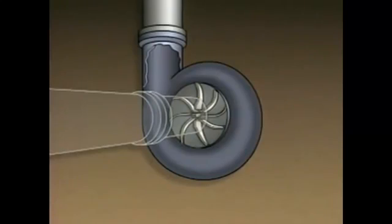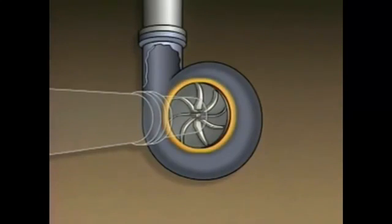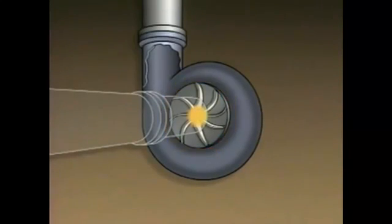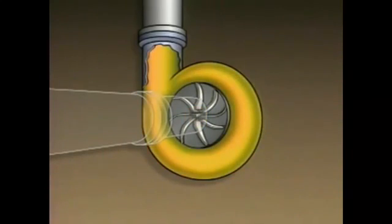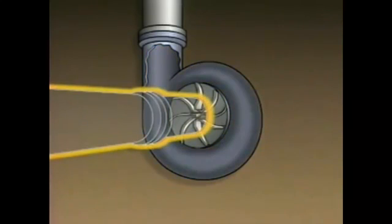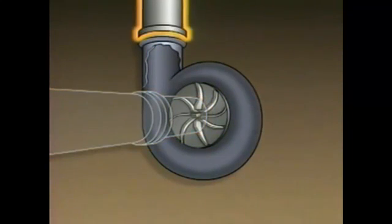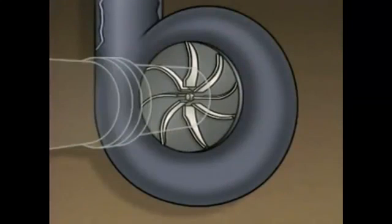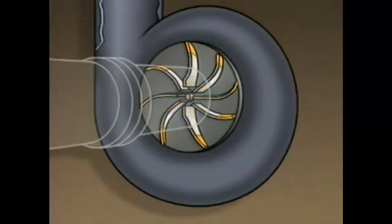Now let's look at a single-stage centrifugal compressor from the suction line side to see how it works. In this illustration, we can see the impeller, the suction eye, which is the area in the center of the impeller, the volute, the suction line, and the discharge line. The impeller consists of a series of vanes. The tips of the vanes closest to the shaft are called suction vane tips. The tips farthest from the shaft are called discharge vane tips.